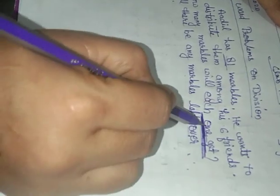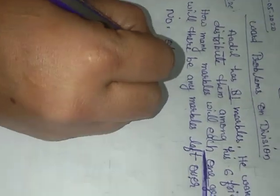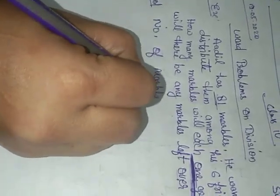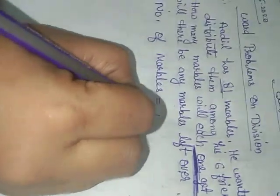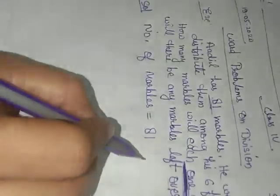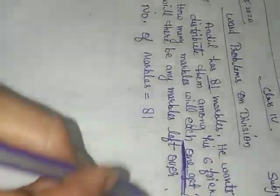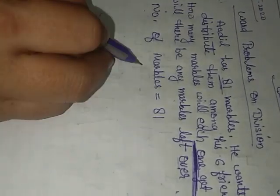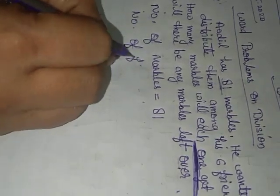When the question is asking each one, it means we divide. Now, solution: number of marbles is equal to 81. Number of friends is equal to 6.